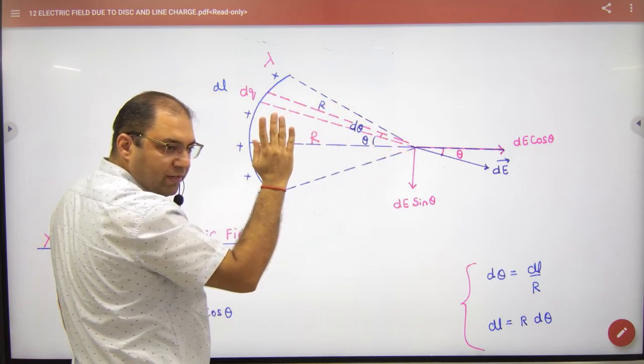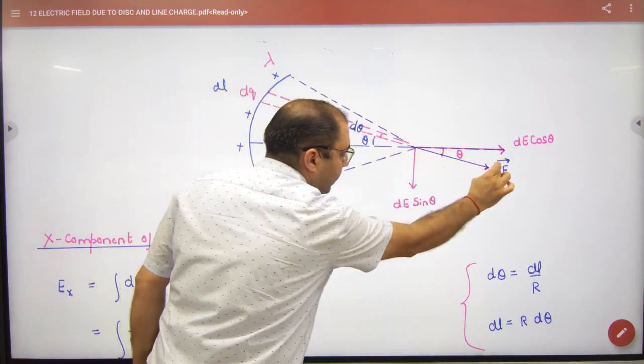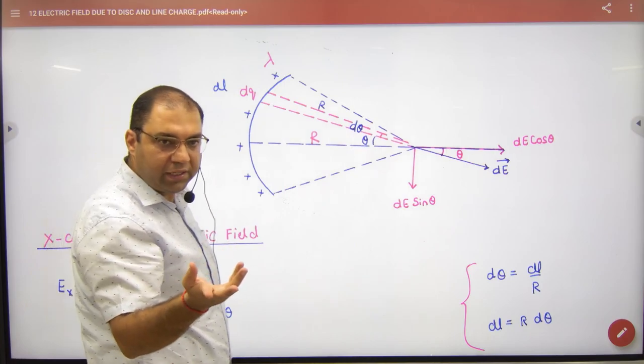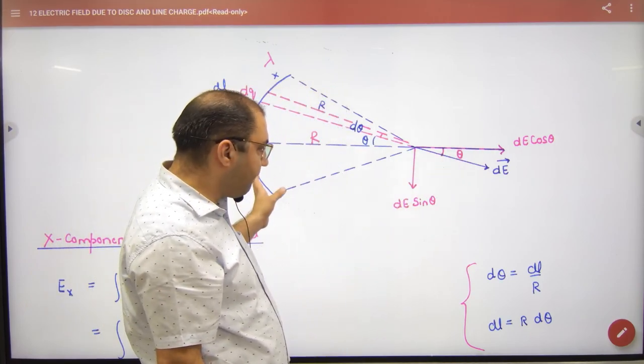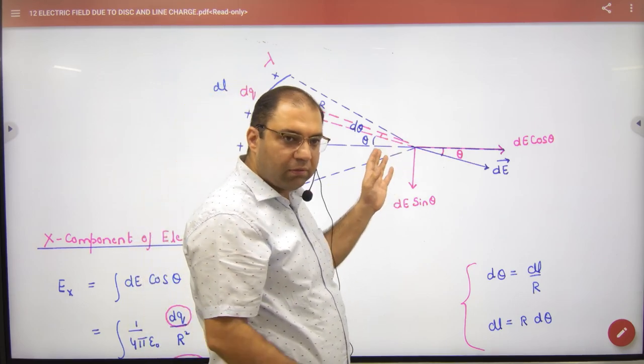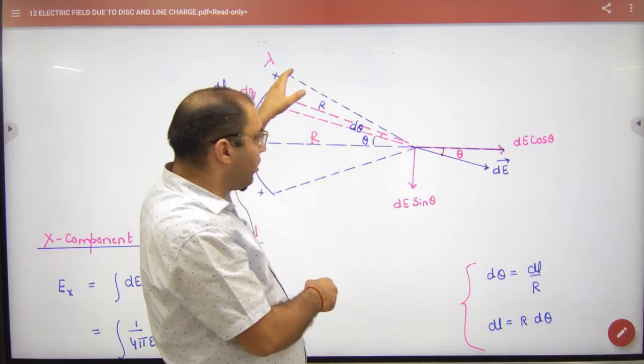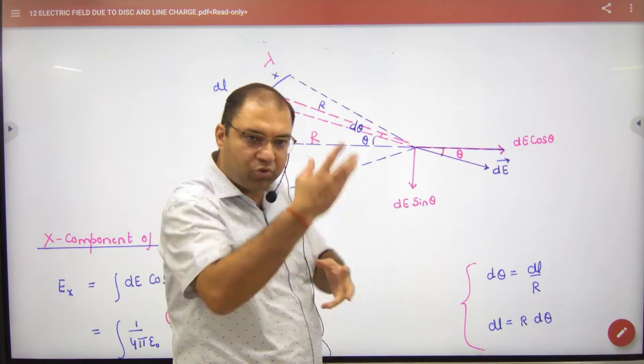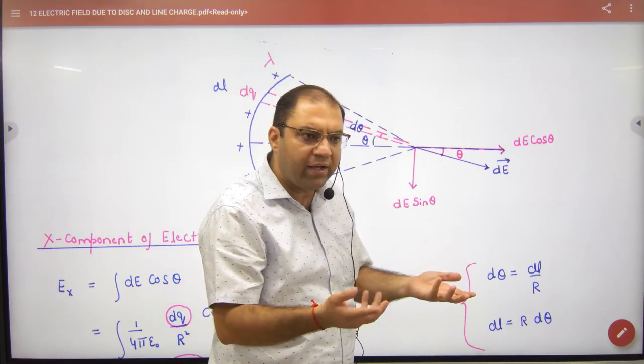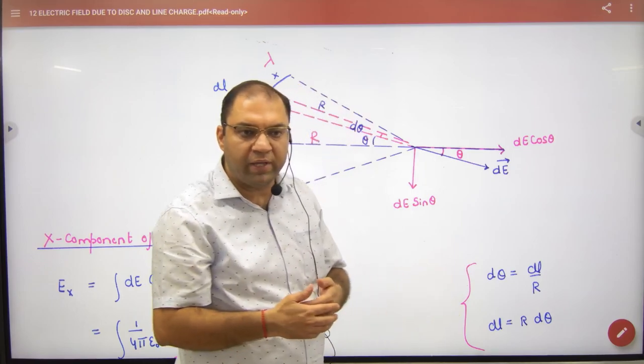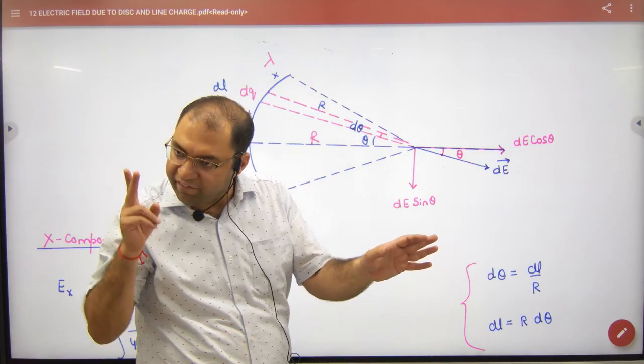Here we have to take dq plus 1, then dq, here we have to take small dE. In the ring there will be two components, cos and sin. If we take another component, then obviously, because this angle is big and this angle is small, that means Y components cancel. It will exist in X and Y.